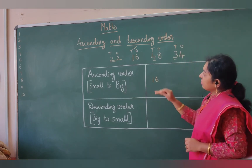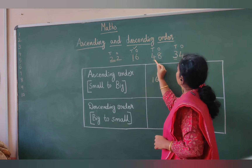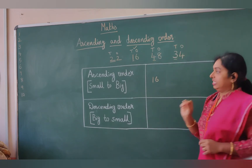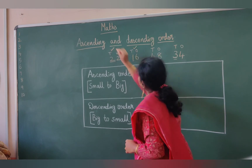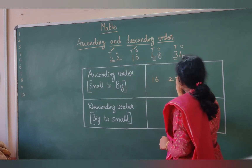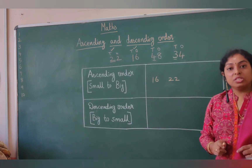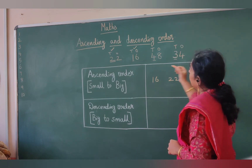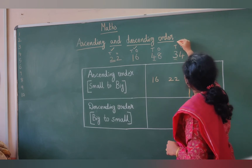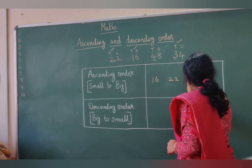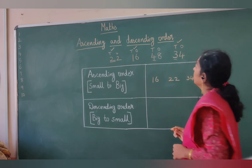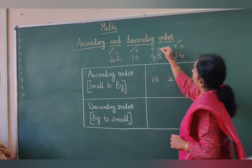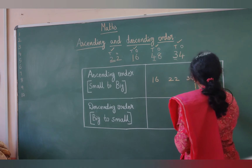Look for the next number. The remaining tens digits are 2, 4, and 3. Which number comes after 1? It is 2, so let us write 22 as the next smallest number. After 2, we have 3, so let us write 34. After 3, we have 4 in our sequence, so let us write 48.